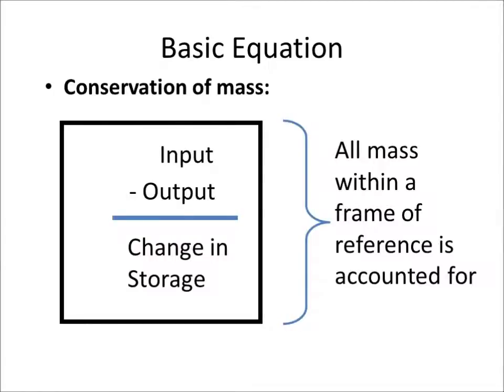The basic equation for conservation of mass looks like this: input minus output equals change in storage within a frame of reference over a given time step. The time step is important — it could be a minute, a year, a century, or a millennium. The frame of reference is also important because we need to know the system boundaries in order to carry out an accounting process for mass, using volume as its equivalent.